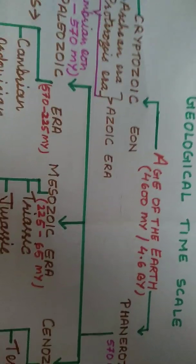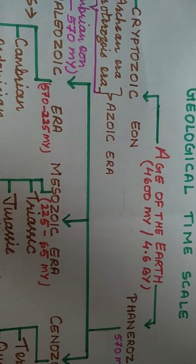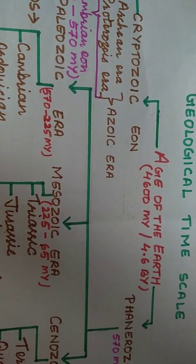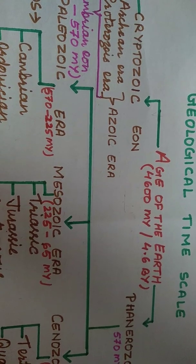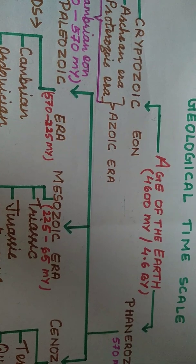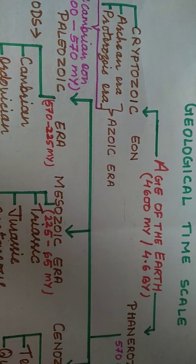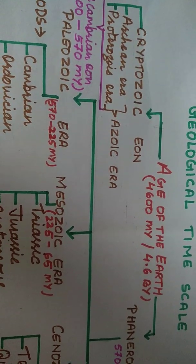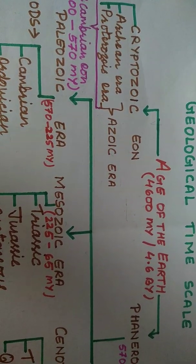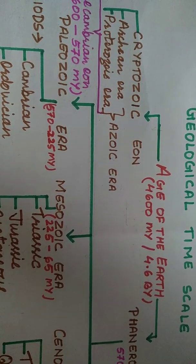Now we are going to start the topic: Geological Time Scale. Geological time scale is all about the Earth — when the earth was born, when it was formed, what is its age, and what events occurred up until this time. So it is to know about the Earth's history. Geological time scale can be defined as the time period that covers Earth's history from its origin to the present time.